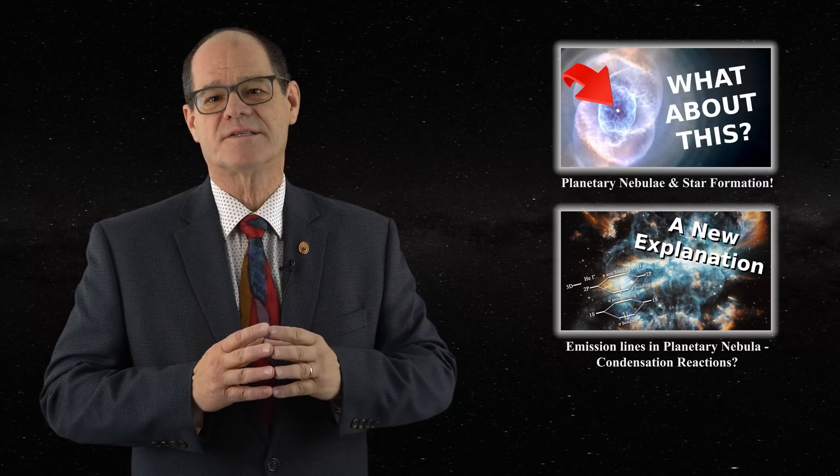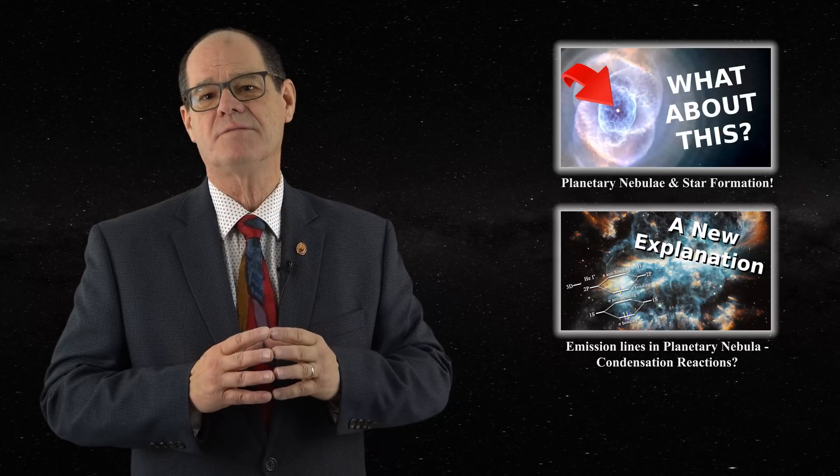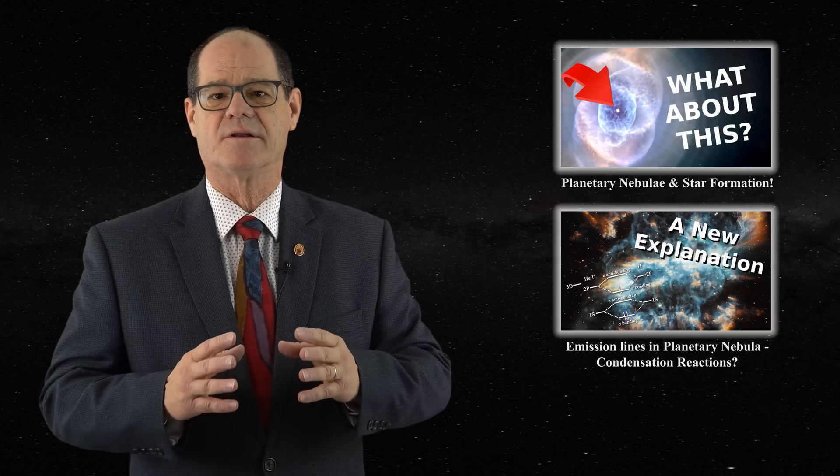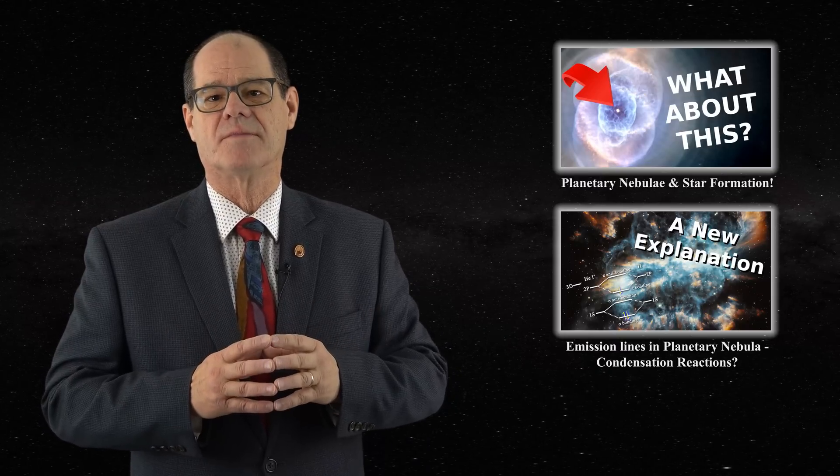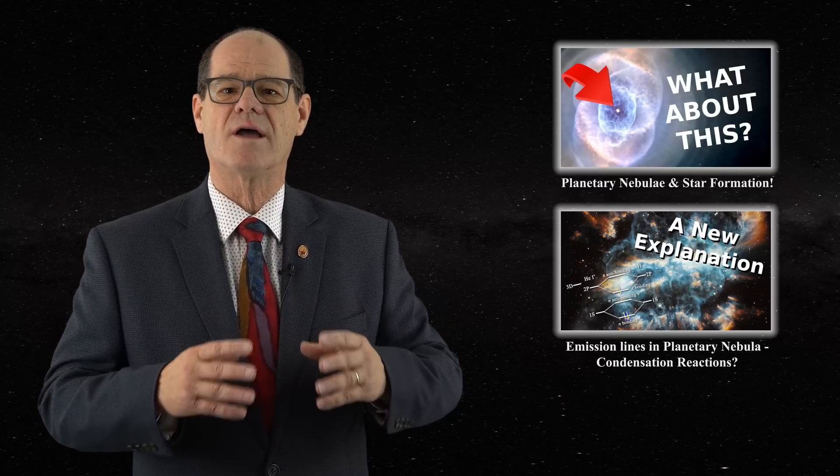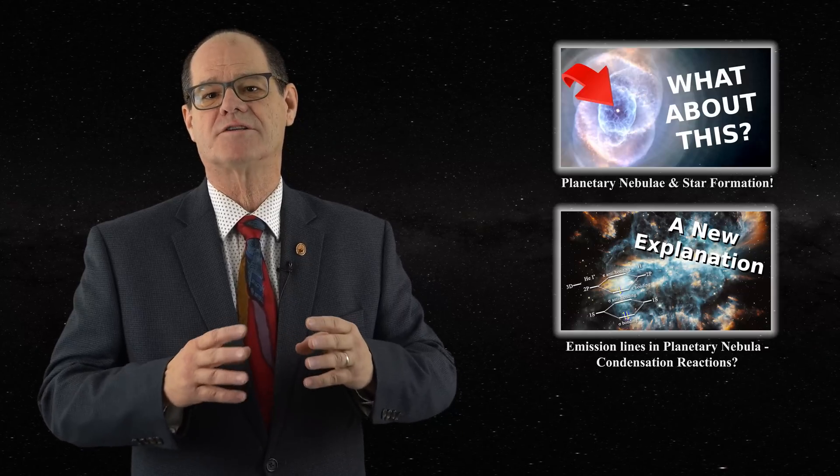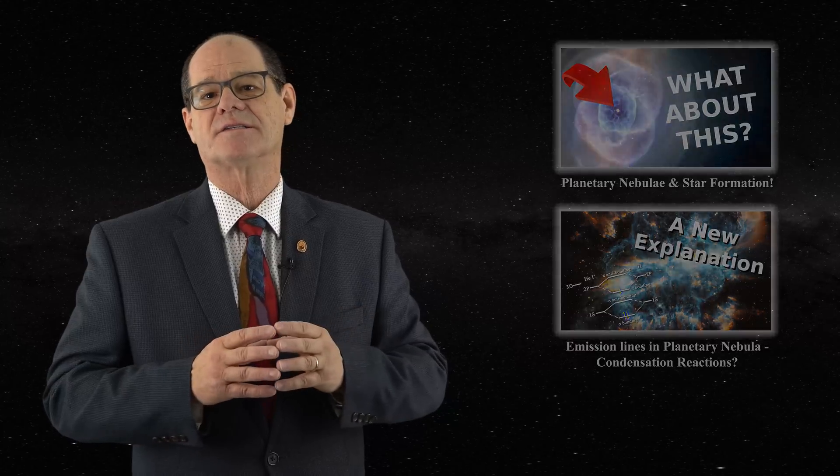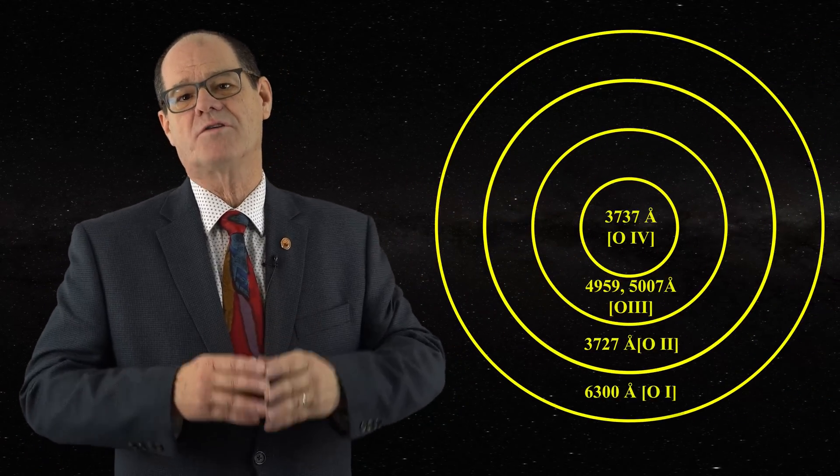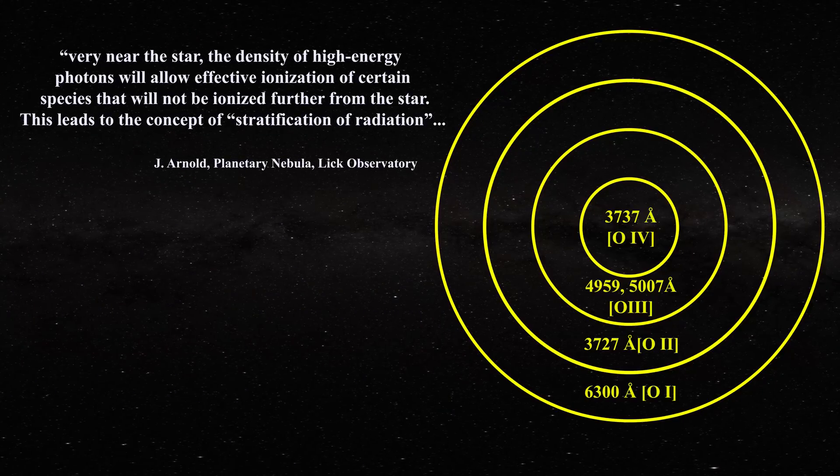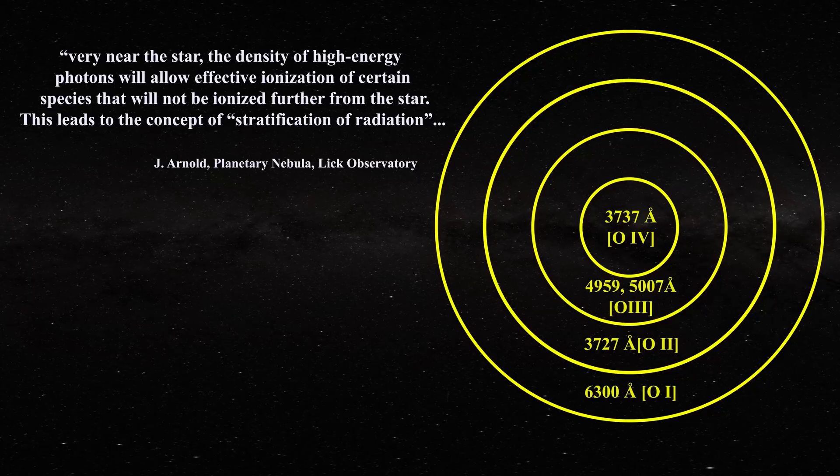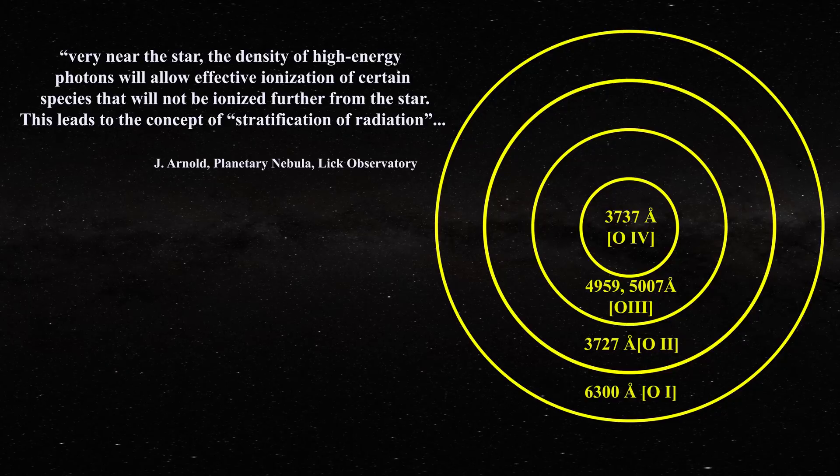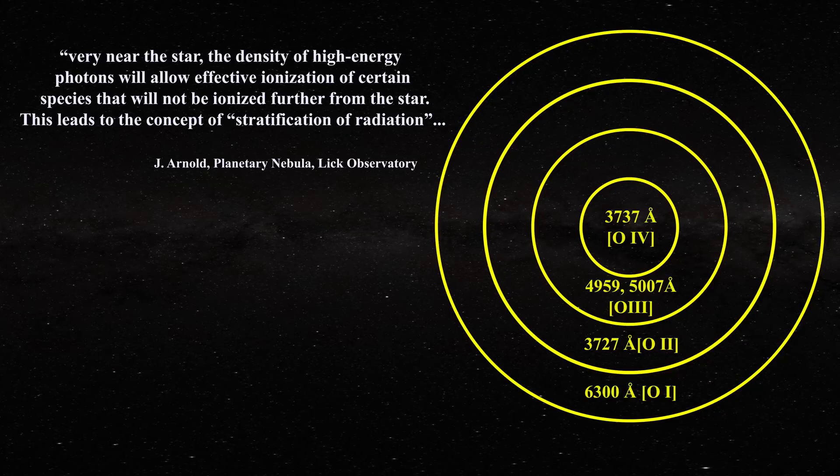In the second video, the standard account for the presence of forbidden lines in planetary nebula was presented. In this model, a central star must first photoionize hydrogen or helium. The resulting electrons are then used to ionize other atoms, therefore giving rise to virtually all the forbidden lines. A schematic representation of this idea is presented in this figure. It is argued that very near the star, the density of high energy photons will allow effective ionization of certain species that will not be ionized further from the star. This leads to the concept of stratification of radiation.